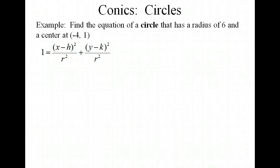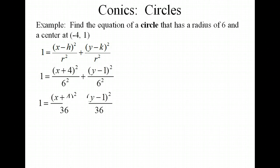Now let's take that format and write an equation for a circle that has a radius of 6 and a center at (-4, 1). Keep in mind that for the h value, we're plugging in -4, and for the k value, we're plugging in 1. For r, we're plugging in 6. So let's simplify just a little bit for our denominators. This gives us an equation of that circle.